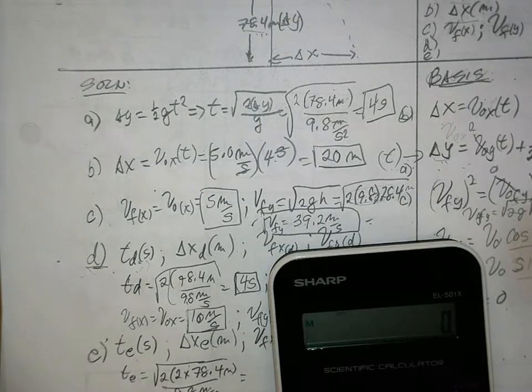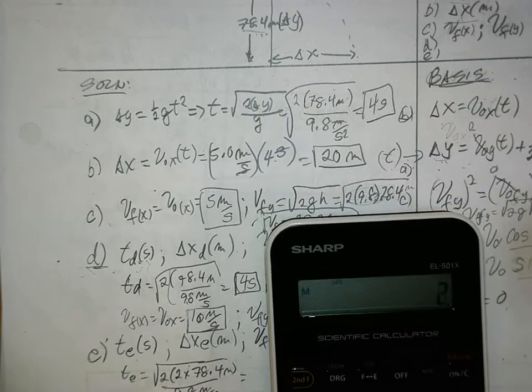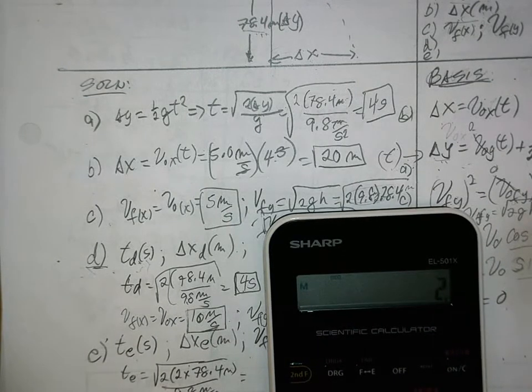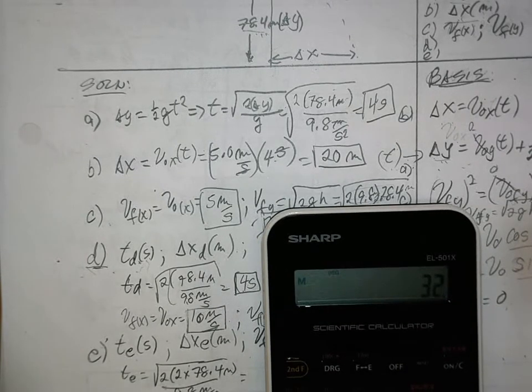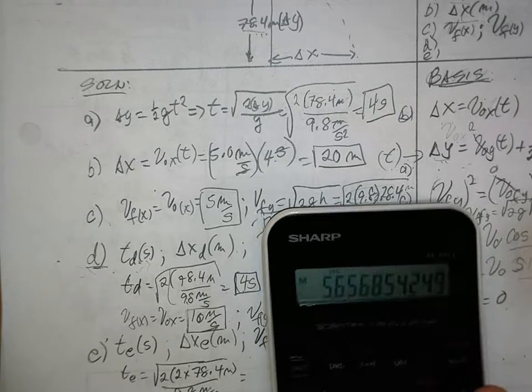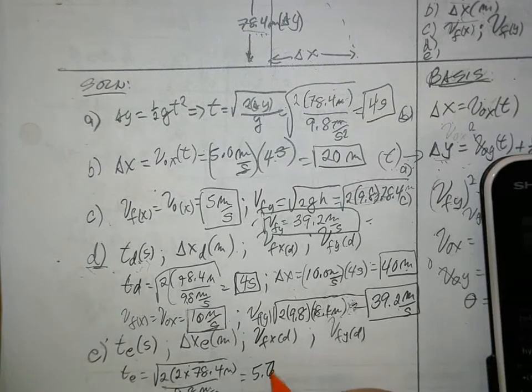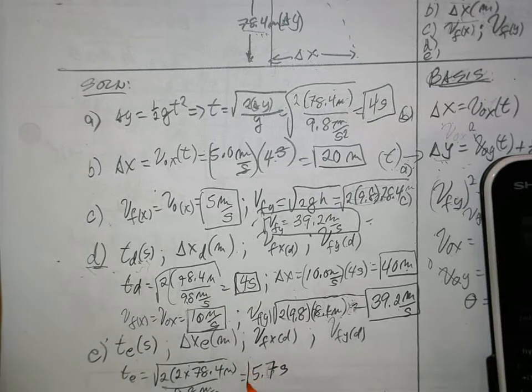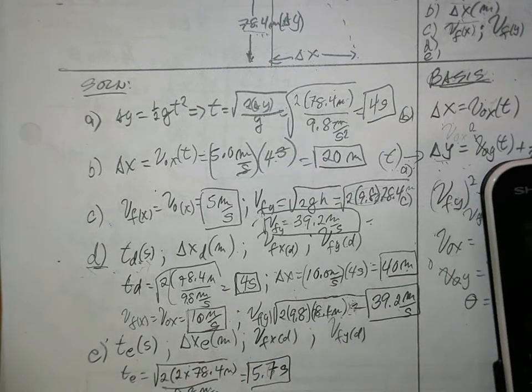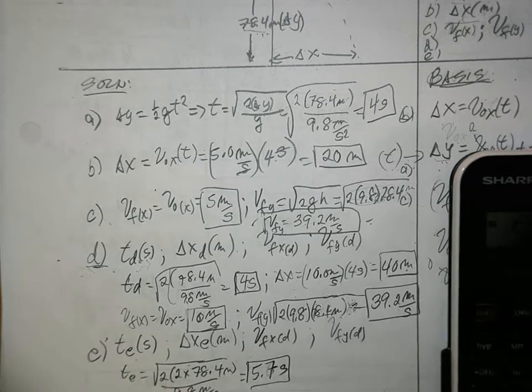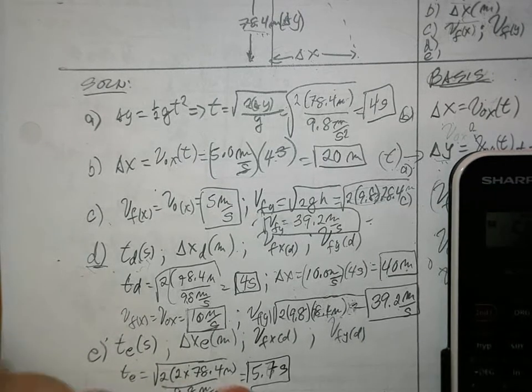I'm going to do that here. So 2 times 2 times divided by 9.8 equals square root. It's now 5.6, 5.7 seconds. Or 6. It doesn't matter. You can make it 6 seconds if you like, because it should really be 2, right? Because this is the least decimal.